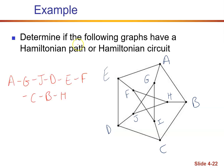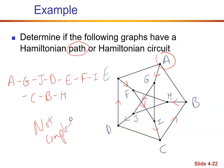So in this case, I found a path: A to G, to J, to D, to E, to F, to I, to C, to B, and then to H. I found a path. Can we find a circuit? Hopefully you noticed something about this graph — it's not complete. Vertex B does not connect to I, does not connect to G, does not connect to every single vertex. So in this case, we really can only find a path.